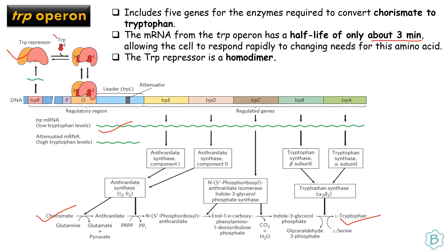When tryptophan is present at high levels, it binds to the repressor, allowing a change in conformation that leads to the binding of the tryptophan-repressor complex to the operator. Thus, the mRNA is attenuated — the mRNA which is synthesized from the operon is reduced.